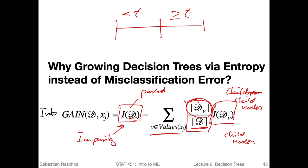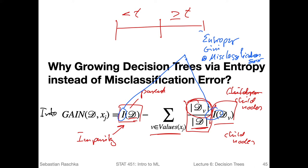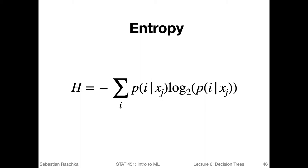This is just a brief recap from the previous video. The impurity function I can be either the entropy, the Gini, or the misclassification error - for both the parent and the child nodes, we choose one of the three. Usually, we keep it consistent: if we use entropy for the parent, we also use entropy for the child nodes, and the same for Gini. In practice, we would probably not want to use the misclassification error because it has a disadvantage, which we will discuss in this video.